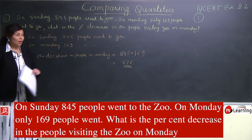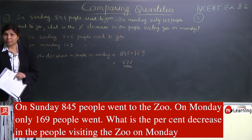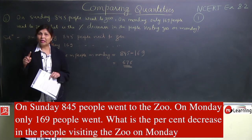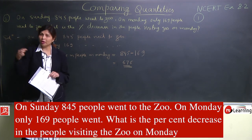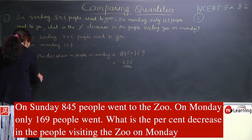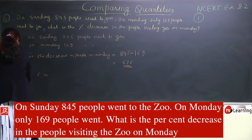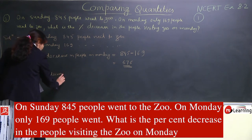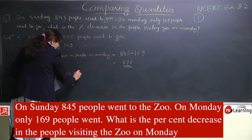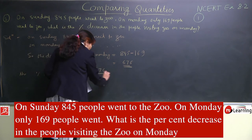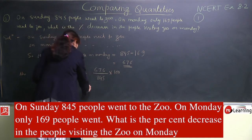Ab yeh to aaya decrease in people, but humein kya nikalna hai — percentage decrease. Percentage nikalne ke liye: percentage decrease in people = (decrease / total) × 100. Yahan total Sunday ka figure lenge, jo tha 845.